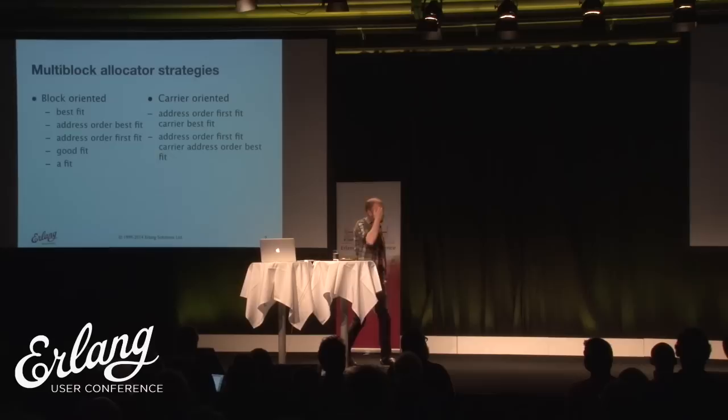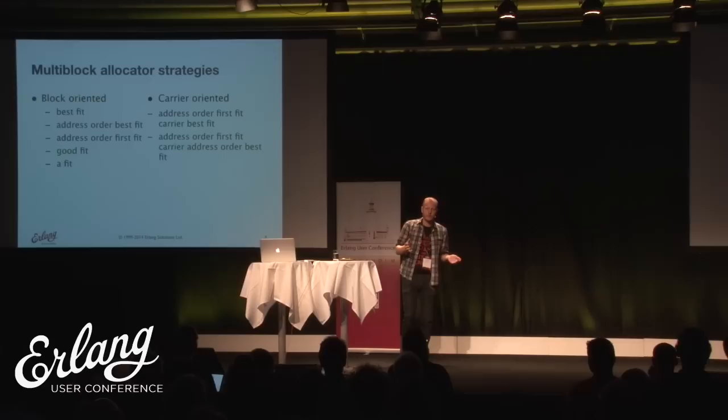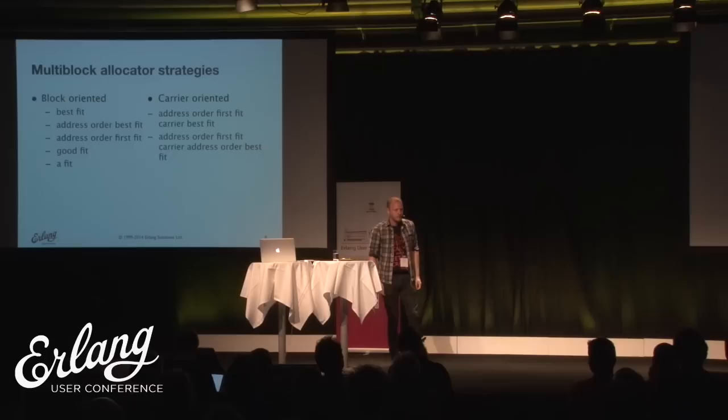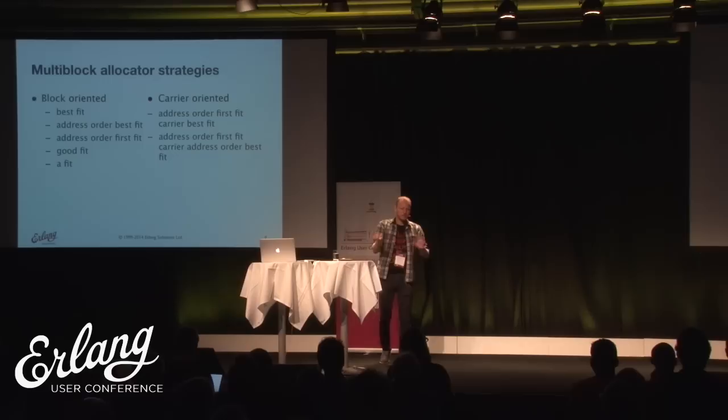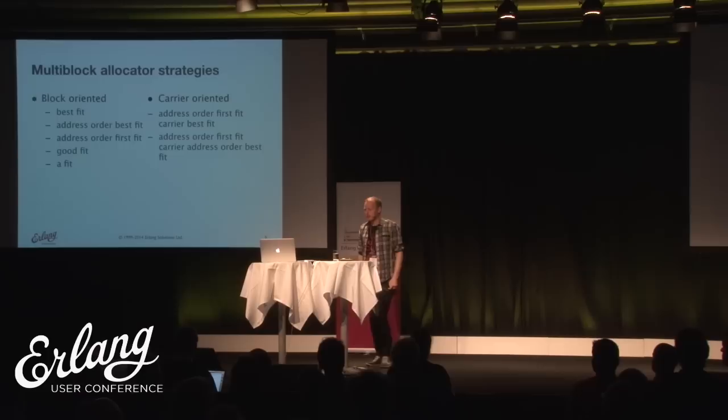For multi-block allocators, there are currently around seven different allocation strategies, with at least one being added each major release. There are two categories: block-oriented strategies, which are sorted across carriers among blocks - examples include best fit, address-order best fit, and so on. If you want to understand how they work, the Wikipedia pages describe them quite well.